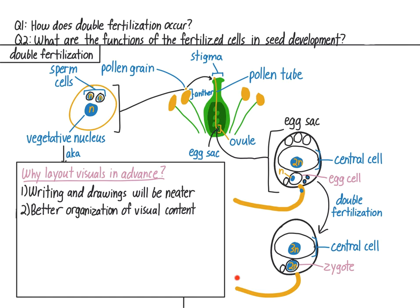For example, if your content has three parts to it, you could separate the page into three parts using straight lines. I separated this page into three parts: the part with the flower bits, the part on the left which explains pollen structure, and the part on the right which explains the egg sac and how double fertilization occurs. Third, having your visuals laid out in advance helps you plan in what order they'll appear and in what order you talk about them. For example, you could show your first visual content on the left and then move to the right, revealing content as you go.